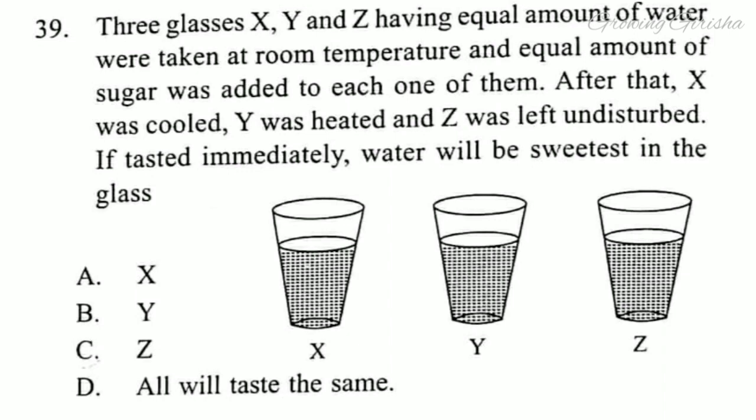Question 39. Equal amounts of water were taken at room temperature and an equal amount of sugar was added to each one of them. After that, X was cooled, Y was heated and Z was left undisturbed. If tasted immediately, water will be sweetest in glass Y. Answer is option Y.